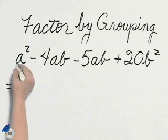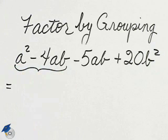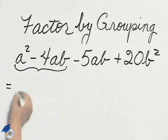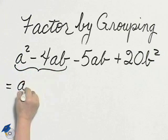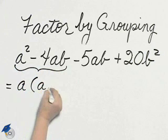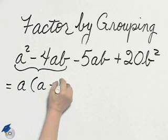In this group, let's look at the common factor which is a, a times a minus 4b.